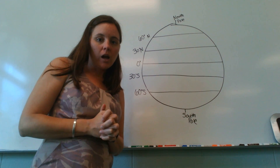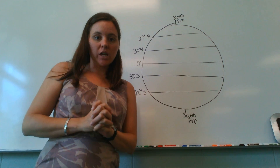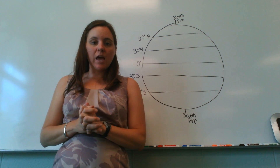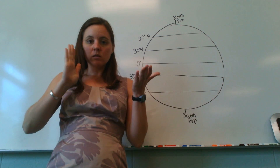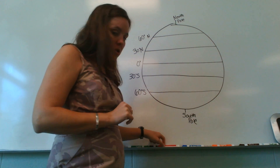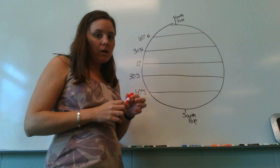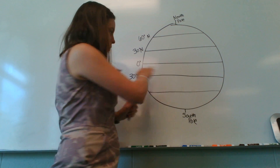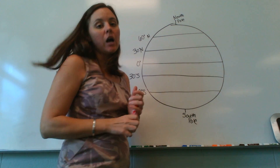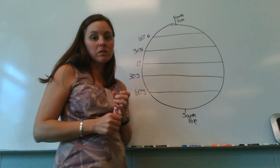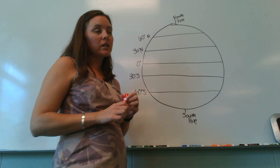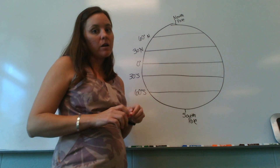Hello. We are talking about global wind belts today. We know that the equator, or zero degrees latitude, on the Earth gets the most sunlight all the time. So that's going to make the air there warm.